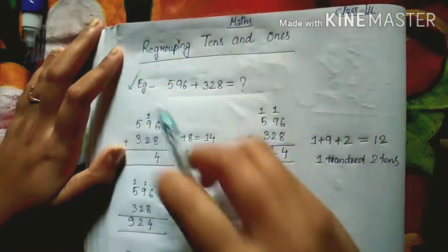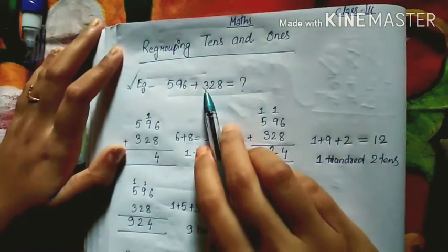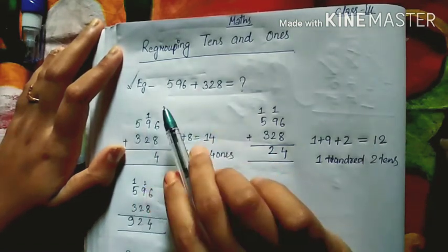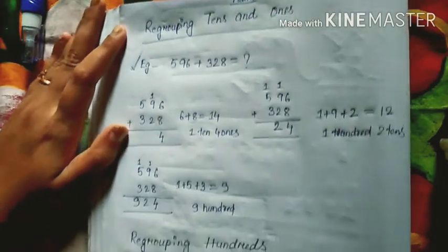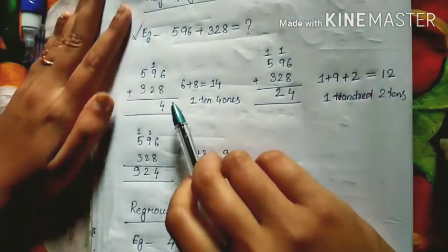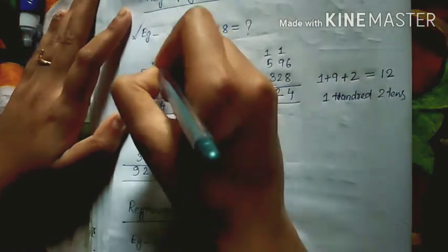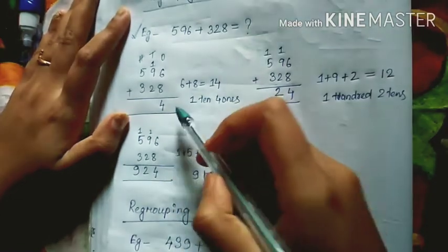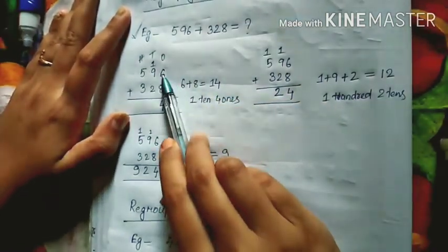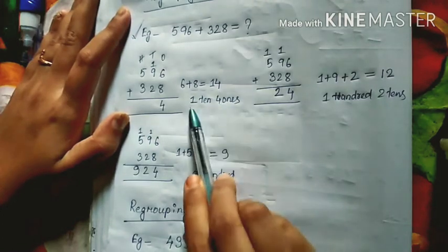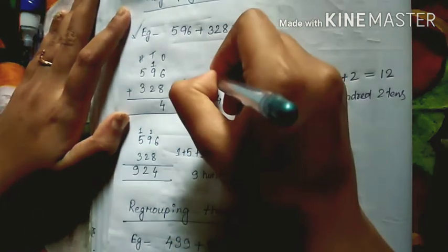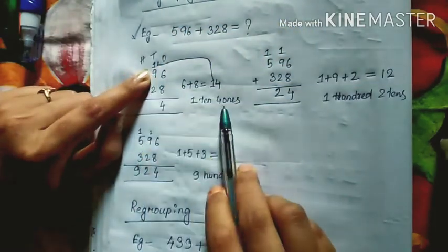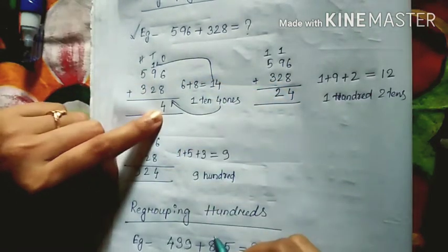I have taken one example: 596 plus 2328. If we add them by regrouping, what will we get? You can see I have written the first step here. We know this is the ones place, tens place, and hundreds place. First of all we start with the ones place: 6 plus 8 equals 14, so 1 ten and 4 ones. The 1 goes to the tens place and 4 comes here in the ones place.